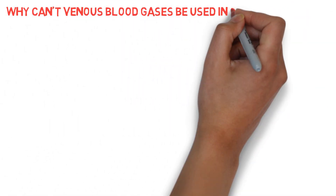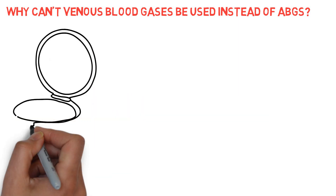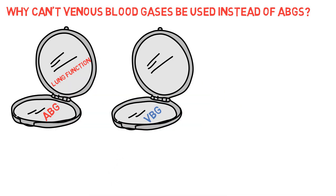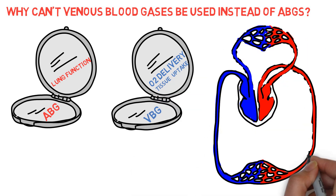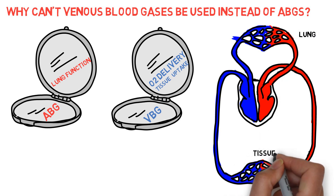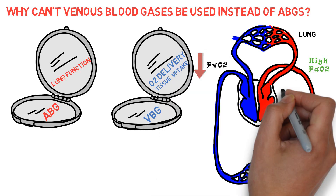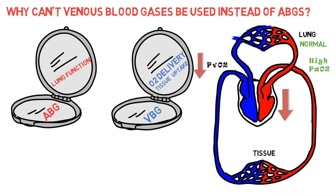Why can't venous blood gas be used instead of ABGs? Arterial blood gases reflect lung function. Venous blood gases reflect the adequacy of tissue oxygenation and tissue carbon dioxide clearance. A low mixed venous PO2, less than 35 mmHg, or increased tissue oxygen delivery reflect tissue hypoxia, and may be the result of decreased oxygen delivery or increased tissue oxygen uptake. Venous PO2 is typically much lower than arterial PO2, and there is often little relationship between the two. For example, the mixed venous PO2 may be low and the arterial PO2 may be high if cardiac output is reduced, lung function is normal, and the FiO2 is high. Normally, the mixed venous PCO2 is only slightly greater than the arterial PCO2. However, venous PCO2 depends on blood flow, and in cases of low blood flow, e.g. cardiac arrest, the mixed venous PCO2 may be high even though the arterial PCO2 is normal or decreased.